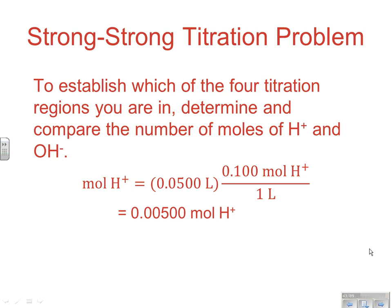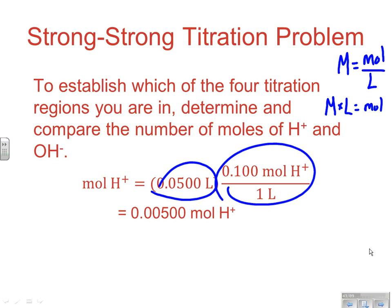To establish which of the four titration regions you're in, compare H+ and OH-. Use molarity times liters to get moles. With 50 mL of 0.100 M HCl, that's 0.0500 L × 0.100 M = 0.00500 mol H+. This stays constant. At 49 mL NaOH: 0.0490 L × 0.100 M = 0.00490 mol OH-. Comparing, we have more H+ than OH-, so we're before the equivalence point on the acidic side.